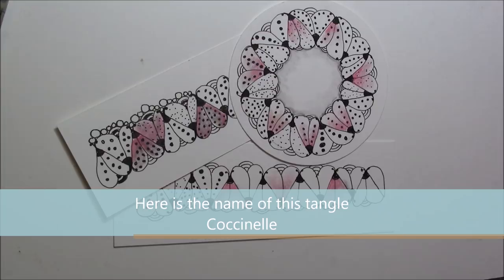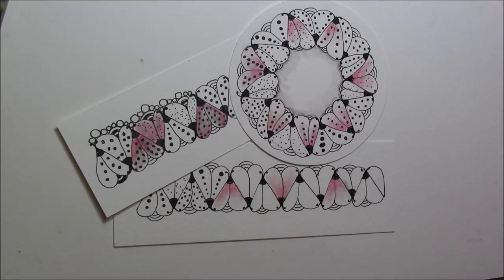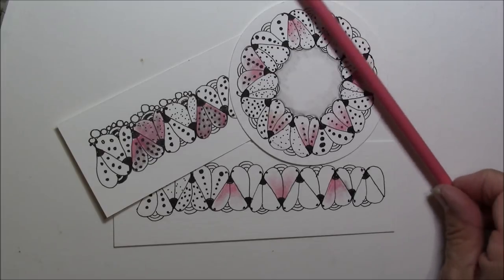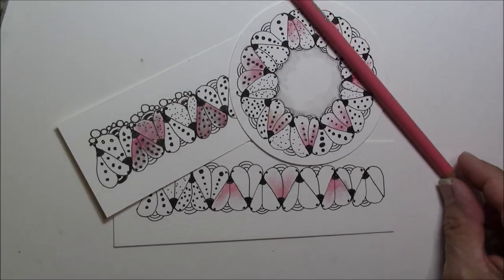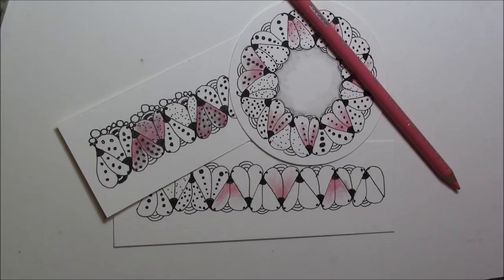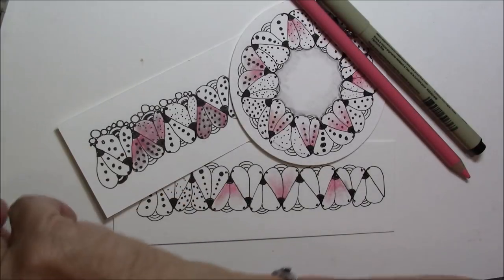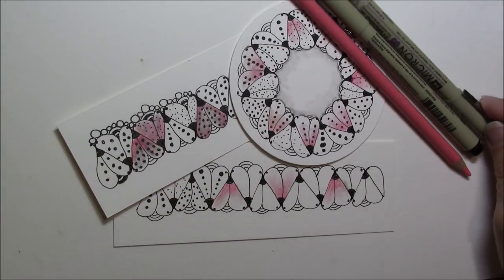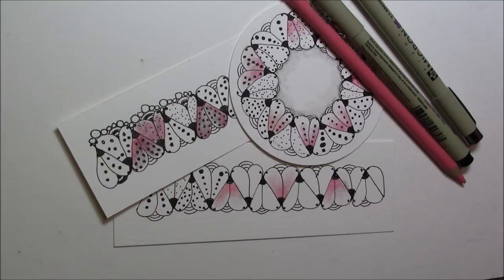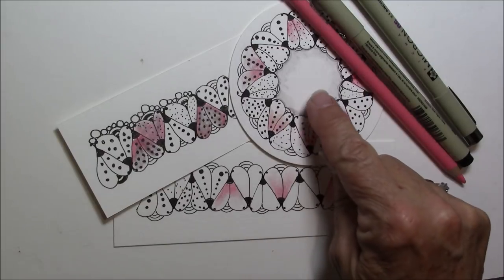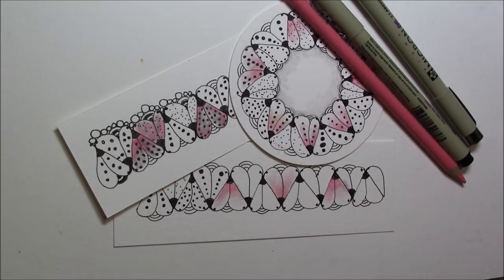I'll give you the spelling so you can get it right but this is a great tangle using colored pencils, your Micron 01 and 05, and you can shade it with just a little graphite. I put a little graphite right here in the center to give it a little depth. Great tangle.